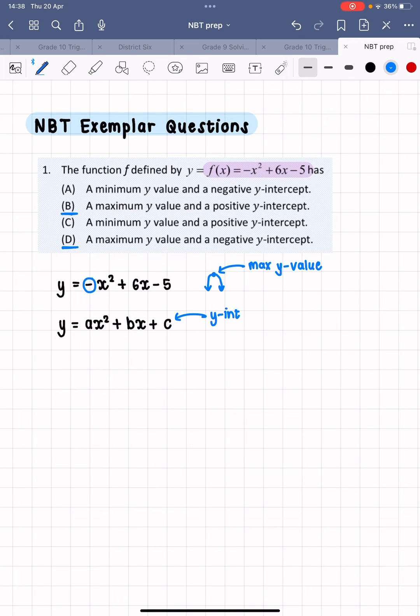Because remember, how do we find a y intercept? By making x equal to 0. That is what you can do in any graph to find the y intercept. You need to make x equal to 0.